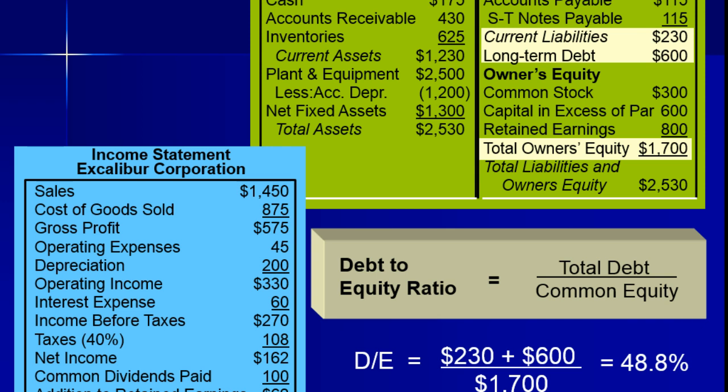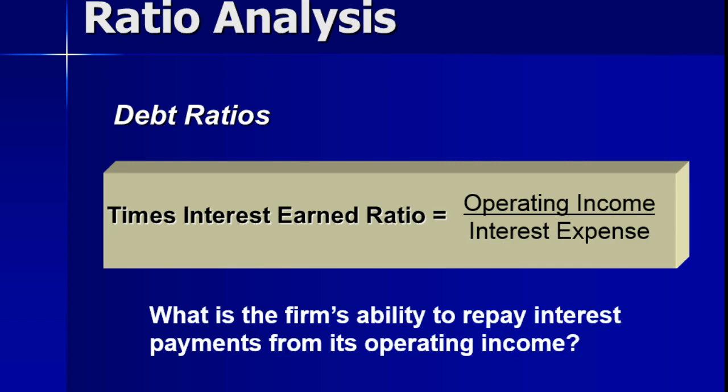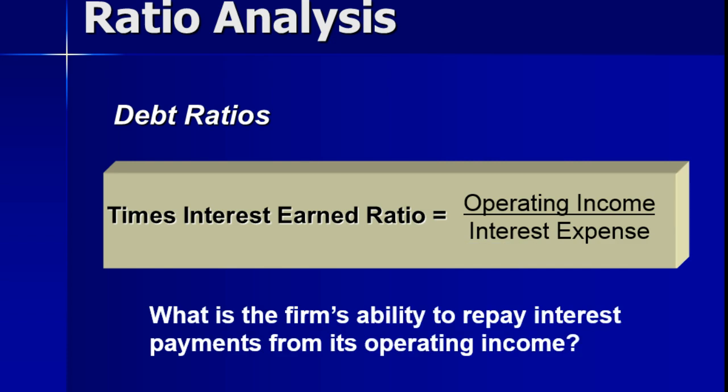Let's look at the times interest earned ratio — operating income compared to interest expense. This looks at how solvent a company is and its ability to repay the interest expenses.